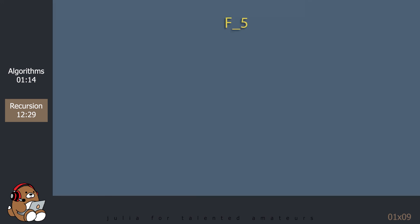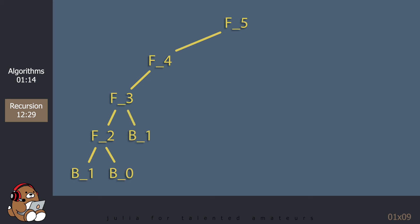The algorithm actually repeats the process on a couple of other branches, recalculating values it's already calculated. That's because each recursive call sets up a new local scope, so the algorithm can't see the other calculations. It ends up with the same answer, but it did a lot of unnecessary work.